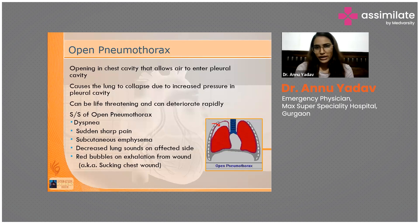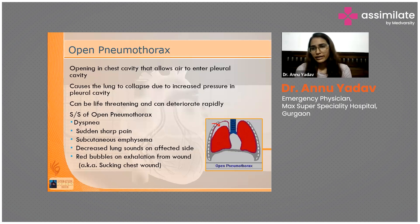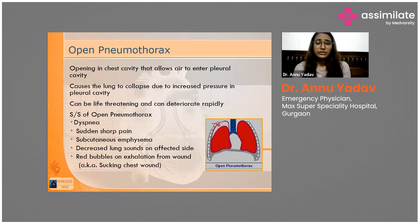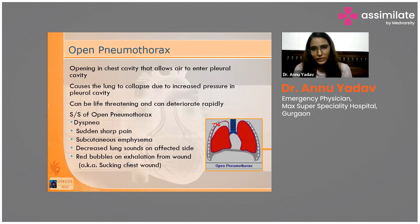Signs and symptoms of open pneumothorax include breathing difficulty (dyspnea), sharp sudden chest pain, subcutaneous emphysema as air gets trapped in subcutaneous tissues, decreased or absent lung sounds on the affected side, and red bubbles on exhalation from a sucking wound — because air is mixed with blood.